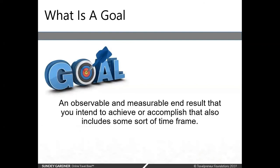A goal is an observable and measurable end result. It's not just something you say like 'I want to lose weight.' It's 'I want to lose 50 pounds by June' — something you intend to achieve or accomplish that also includes a time frame. A goal without a time frame is just wishing for it. A goal that's not measurable is not tangible. So you want to make sure that your goals have these characteristics.